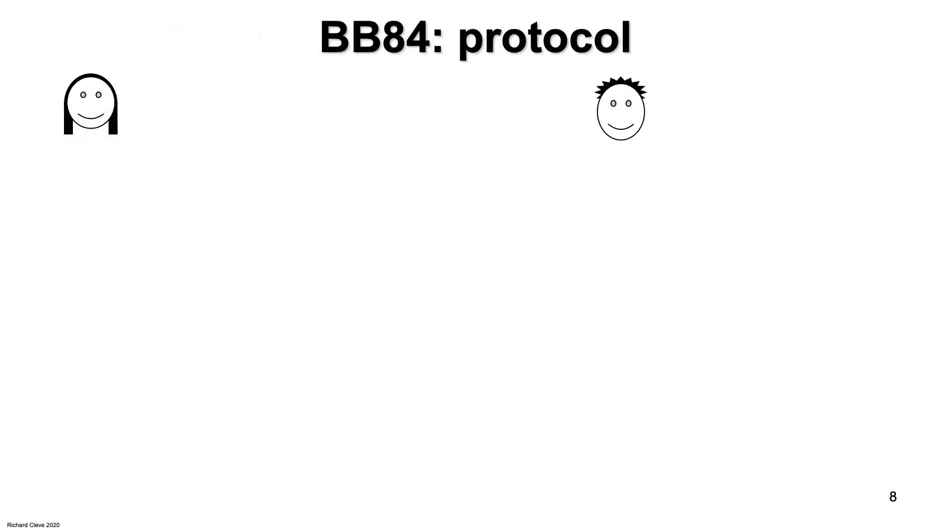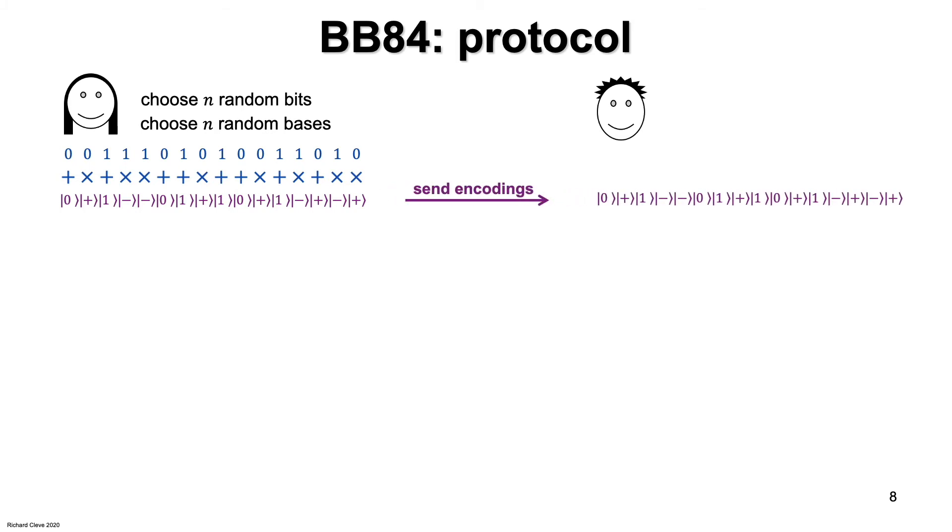Okay, so here's how the BB84 protocol starts off. Alice chooses n random bits, uniformly of course. Then Alice chooses n random bases on which to encode these bits. Then Alice creates the encodings of the bits as qubits. For every instance where a computational basis is chosen, that bit is encoded as a computational basis state. For every instance where a plus minus basis is chosen, that bit is encoded as a plus or minus state. Then Alice sends the encodings over to Bob on the quantum channel.